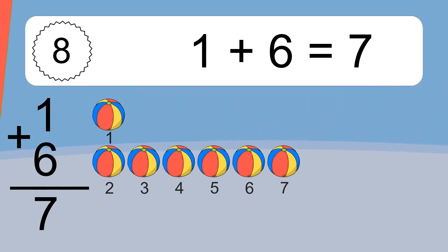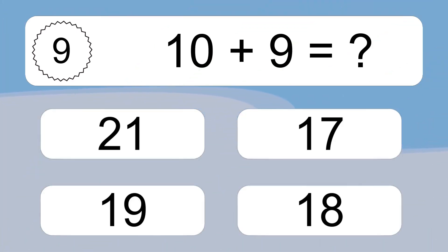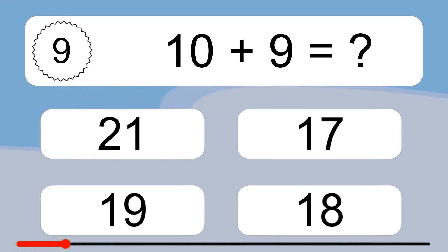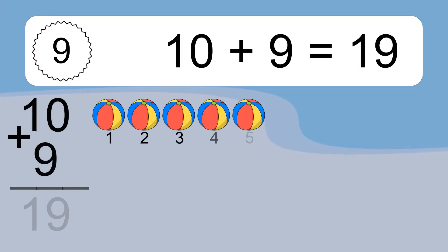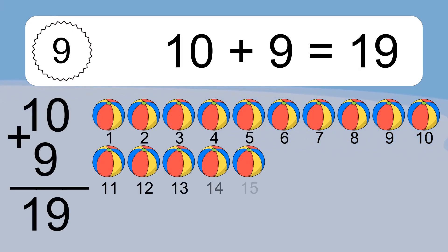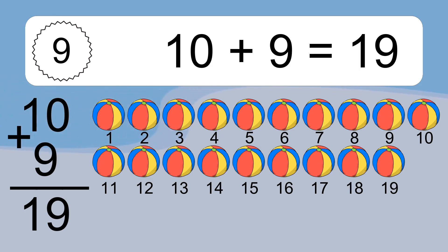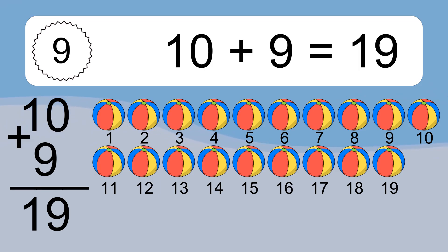10 plus 9 equals what? 10 plus 9 equals 19. Let's count it. 1, 2, 3, 4, 5, 6, 7, 8, 9, 10, 11, 12, 13, 14, 15, 16, 17, 18, 19.